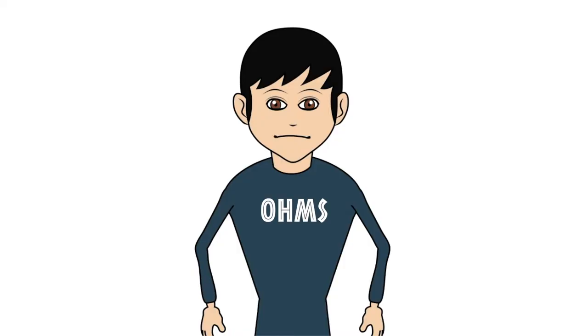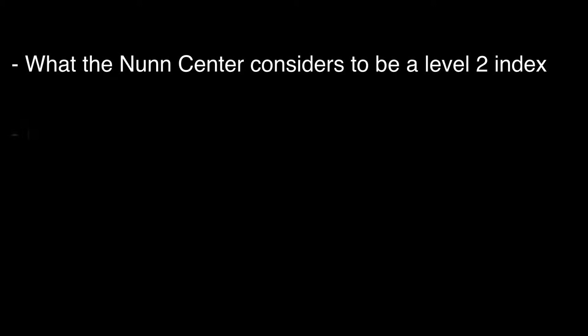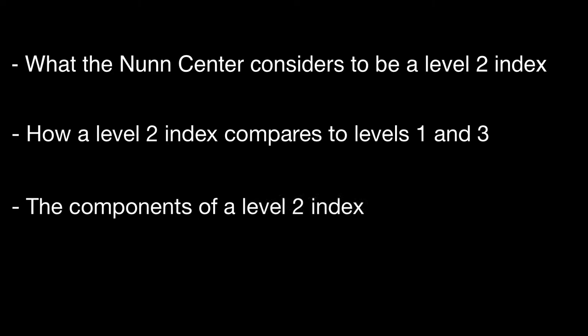Currently we have three levels of OHMS indexing, beginning at level 1 and increasing in content and detail to level 3. When you watch this video, you will learn what the Nunn Center considers to be a level 2 index when using OHMS, how it compares to a level 1 or 3 index, what the components of a level 2 index are, and why you might choose to index an interview at level 2.